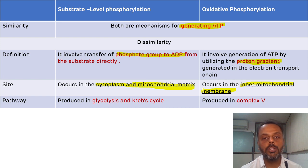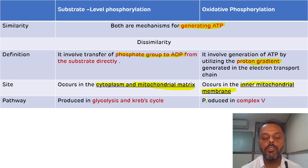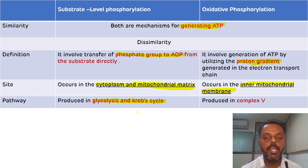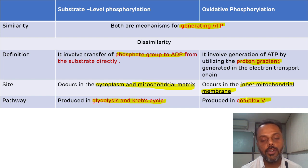The third difference is related to the pathway. The pathways that utilize substrate level phosphorylation are glycolysis and the Krebs cycle. Oxidative phosphorylation, as we know, involves Complex 5 — that is the ATP synthase complex of the electron transport chain.